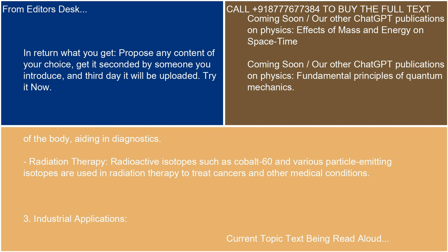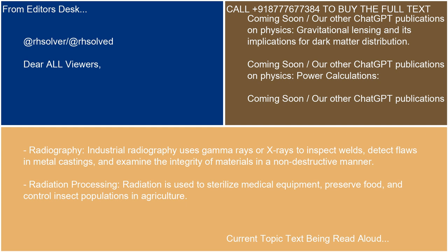Industrial applications — radiography: industrial radiography uses gamma rays or x-rays to inspect welds, detect flaws in metal castings, and examine the integrity of materials in a non-destructive manner. Radiation processing: radiation is used to sterilize medical equipment, preserve food, and control insect populations in agriculture.